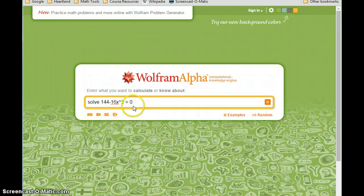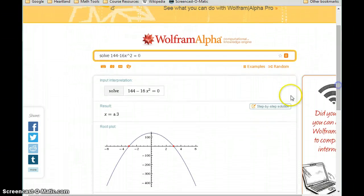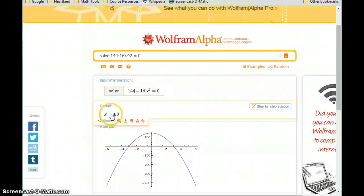We can just type in that exact expression that we wanted to solve, press enter, click that equal sign. Again, check the input interpretation to make sure this matches what we expected, and we get a result of x equals plus or minus three.